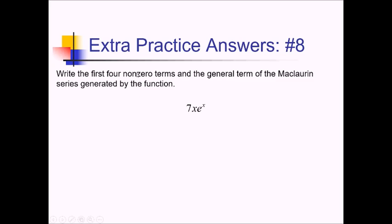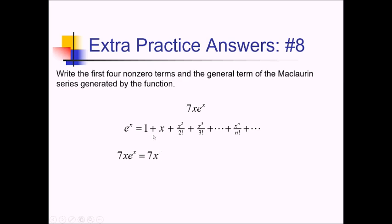For this problem, we want the first four non-zero terms and general term of a Maclaurin series for 7x times e to the x. Starting with the e to the x Maclaurin series — 1 plus x plus x squared over 2 factorial plus x cubed over 3 factorial, general term x to the n over n factorial — we distribute 7x to all terms: 7x, then 7x squared, then 7x cubed over 2 factorial, then 7x to the fourth over 3 factorial, and more generally, 7x to the n plus 1 over n factorial.